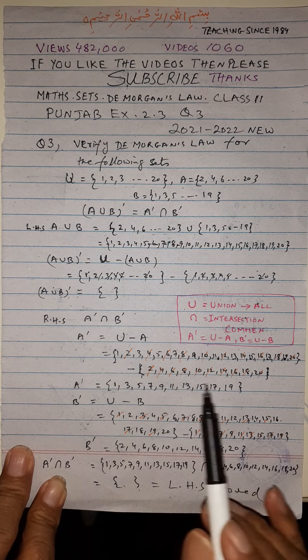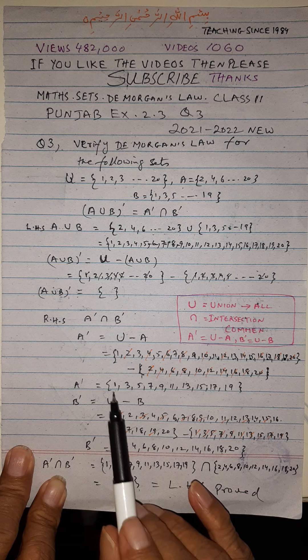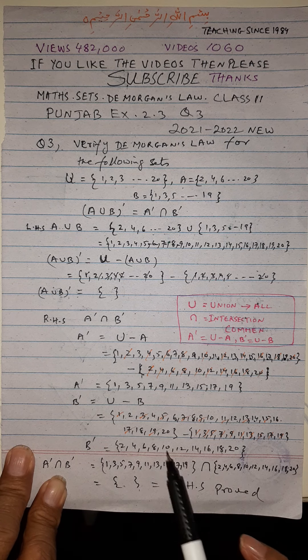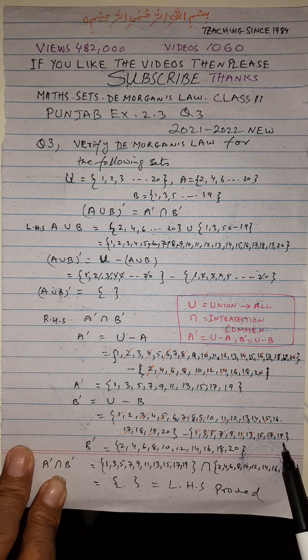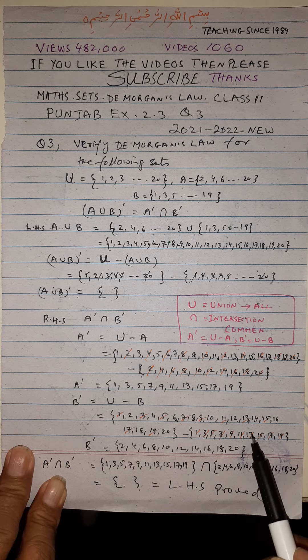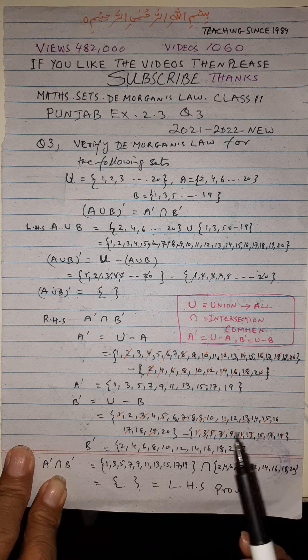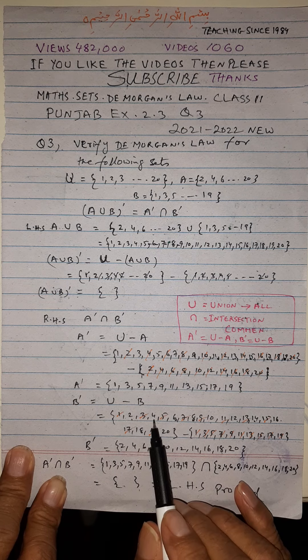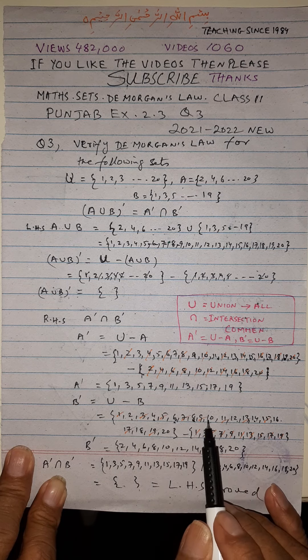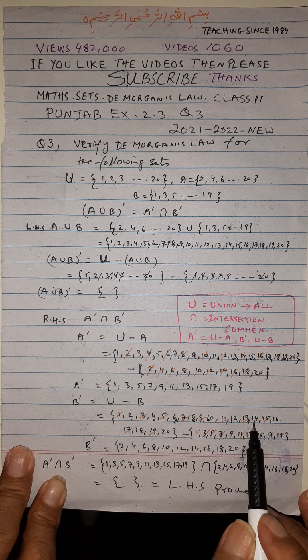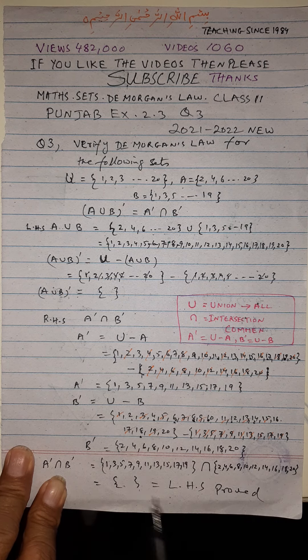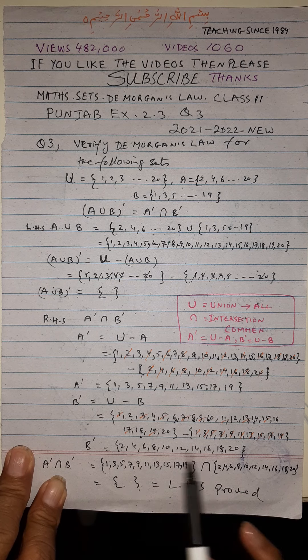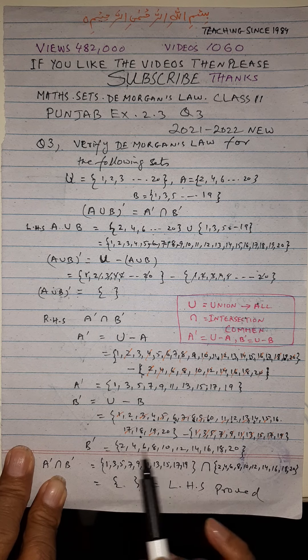Now we have to find B prime. B prime means U minus B. U is 1 to 20, and B is 1, 3, 5, 7, 9, till 19. These will be cancelled from the universal set. The remaining will be 2, 4, 6, 8, 10, 12, 14, 16, 18, and 20. B prime is all even numbers.